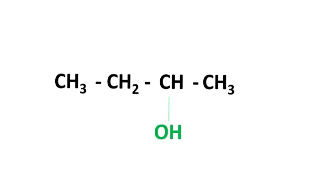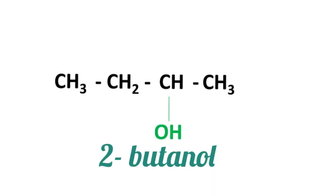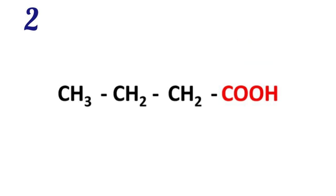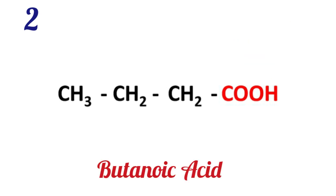Going by IUPAC nomenclature, this compound becomes 2-butanol: 'butanol' because it has four carbons, and '2-butanol' because the -OH functional group is bonded to carbon number two. For the next example, this compound is a carboxylic acid because of the presence of the -COOH functional group, so going by IUPAC, it becomes butanoic acid.